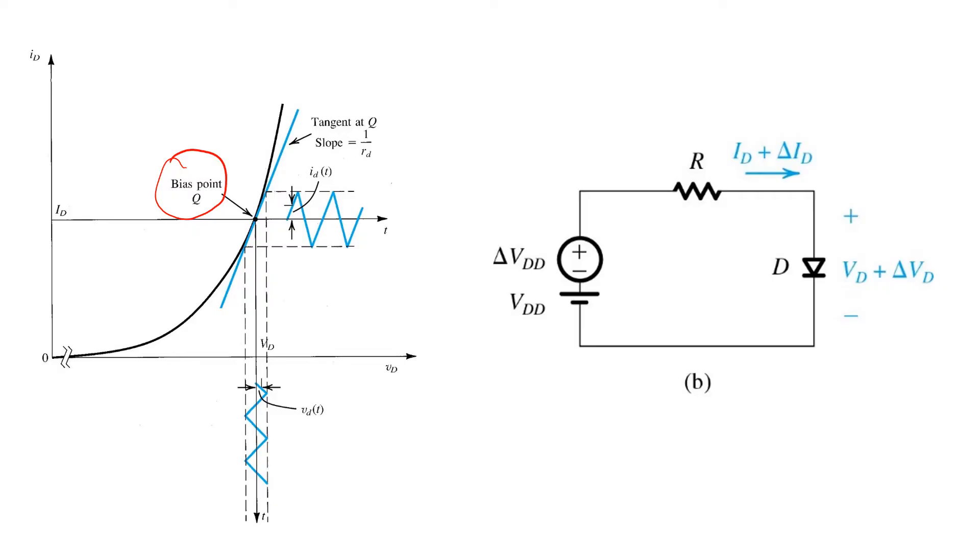But if we consider its behavior around a bias point, and in particular, if we consider only small incremental changes in voltage and current around that operating point, we can approximate the IV relationship of the diode with a straight line that passes through the point Q and is tangent to the exponential curve. Key to the analysis, therefore, is to find the slope of the curve evaluated at the bias point Q.